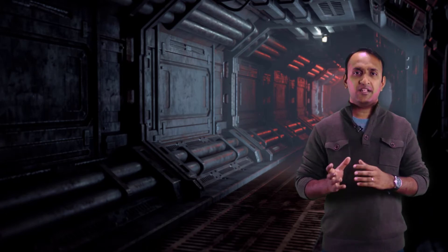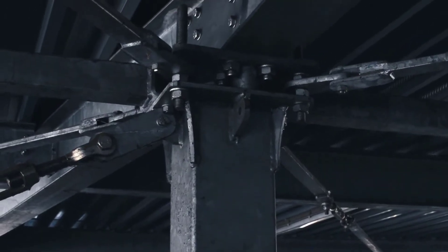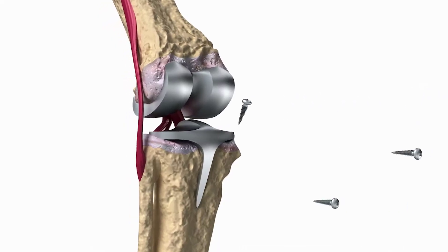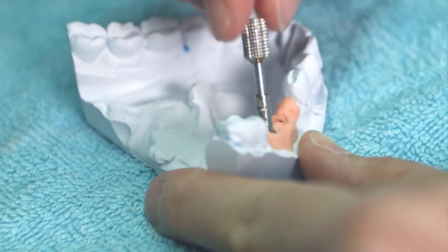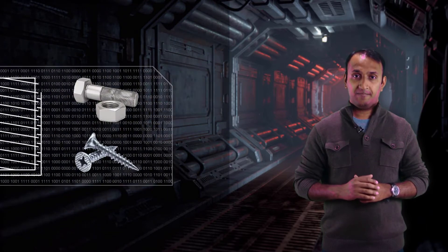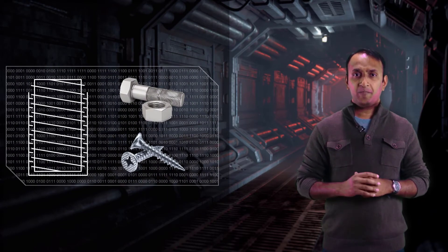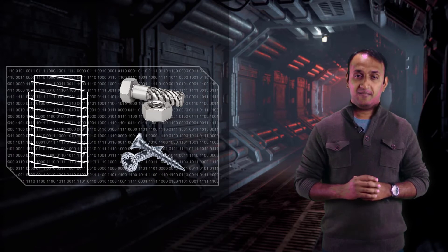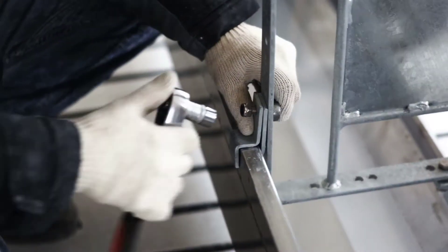Bolted joints are seen in assemblies of different natures and sizes, such as in bridges and buildings, in electronic components, in automobiles, and even in orthopedic and dental implants. Threaded fasteners come in different forms. Two main types are bolts and screws. They both share the feature that forces are transferred between the mating threads, but the main difference lies in their counter threads.